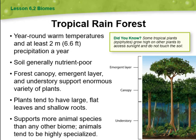The tropical rainforest has year-round warm temperatures and at least 2 meters (6.6 ft) of precipitation a year. Soil is generally nutrient-poor. The forest canopy, emergent layer, and understory support an enormous variety of plants. Plants tend to have large, flat leaves and shallow roots. The tropical rainforest supports more animal species than any other biome, and animals tend to be highly specialized.